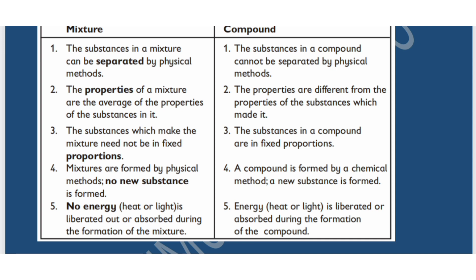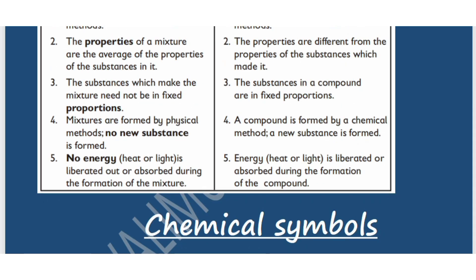A compound is formed by chemical means and a new substance is formed. No energy — heat or light — is liberated or absorbed during the formation of a mixture, while in compounds, energy (heat or light) is liberated or absorbed during the formation of the compound.